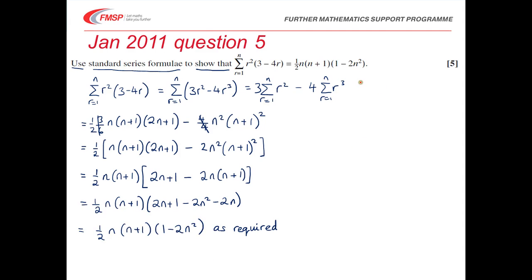So there's a method mark for splitting it into separate sums, two sums. That may be implied by the next row, but it's always a good idea to write that out. Then there's appropriate use of at least one of those standard results, and an accuracy mark if you have put them both correctly.